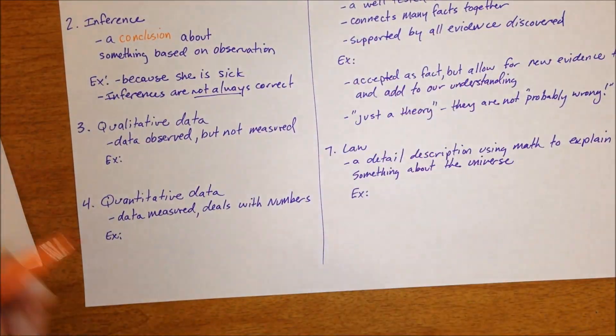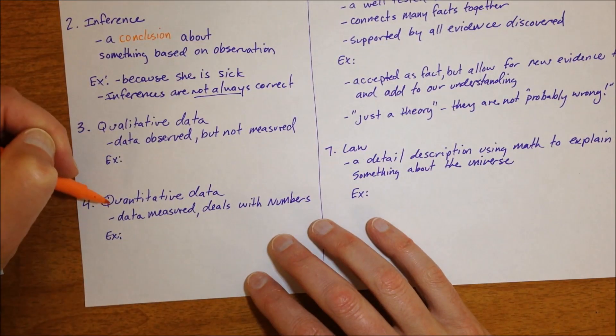In science class, we usually take two forms of data and they're quantitative or qualitative data.